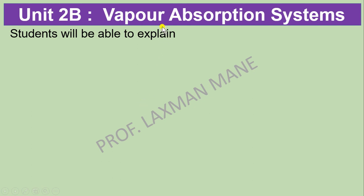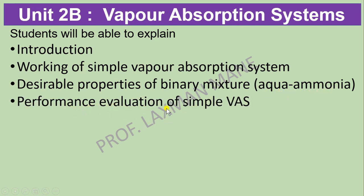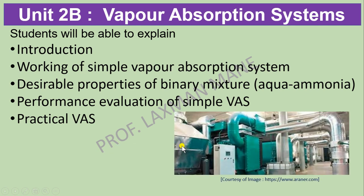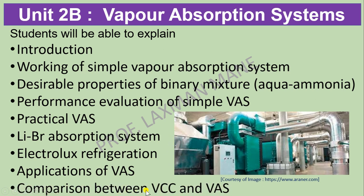Part B is Vapor Absorption Systems. In this you will be able to explain the working of a simple Vapor Absorption System and the desirable properties of binary mixtures — that is, a mixture of refrigerant and solvent. Here water is used as the solvent and ammonia as the refrigerant. Performance evaluation means finding the COP of simple and practical VAS. Lithium Bromide Absorption System, Electrolux Refrigeration System, and applications of Vapor Absorption System will be included, along with a comparison between Vapor Compression Cycle and Vapor Absorption System.